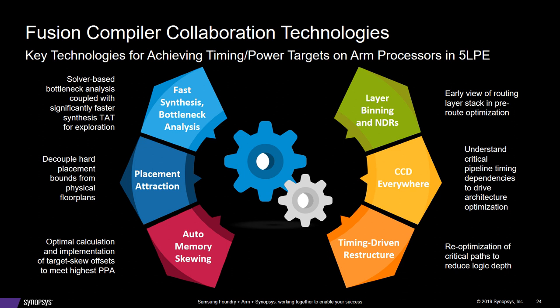Layer binning and NDRs are important for the 13-metal stack, and I'll cover that one in more detail. The fast synthesis and timing-driven restructuring just seem to work — I've not had to mess with those. The data path has worked, but now I'm speaking for the alpha collateral. We're just now transitioning to the beta, which ups the frequency target, so those may play more of a factor in my next run.